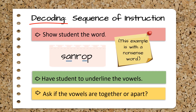Here is the sequence of instruction when teaching students how to decode closed multisyllabic words. First, show your student the word — in this example, I used a nonsense word. Second, have the student underline the vowels in the word. Next, have the student identify if the vowels are located together or apart. If vowels are together, it would be a vowel team and count as one sound.